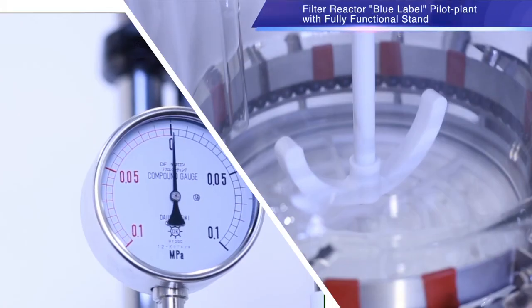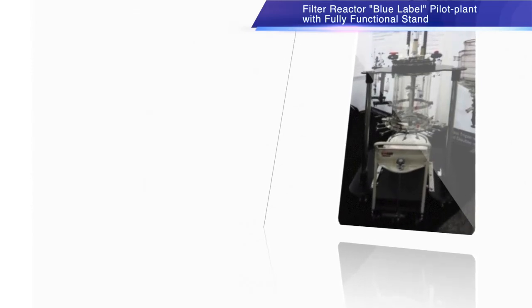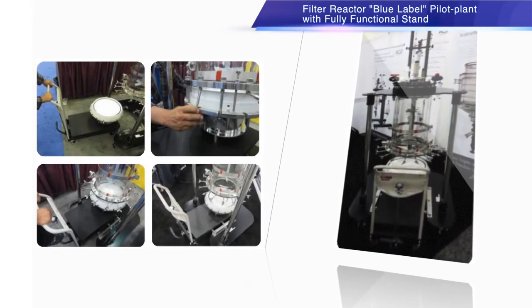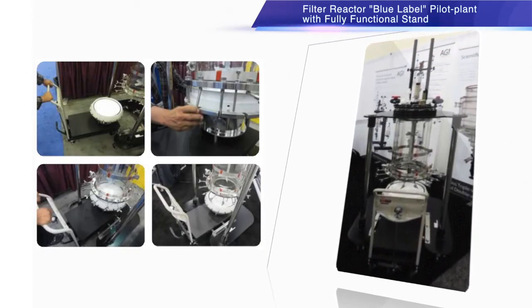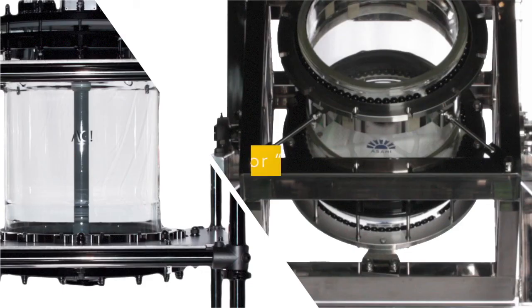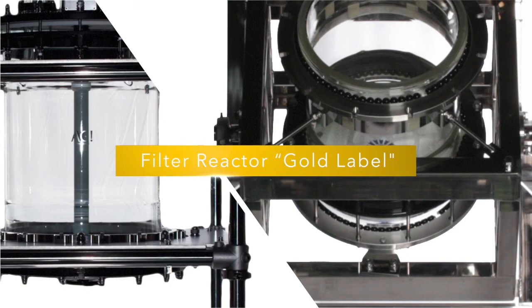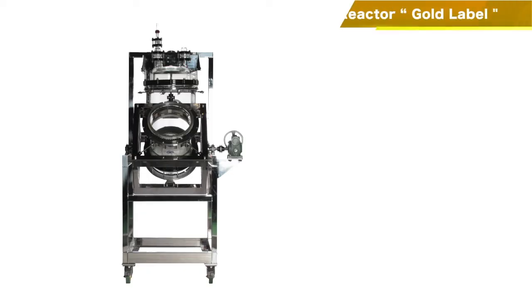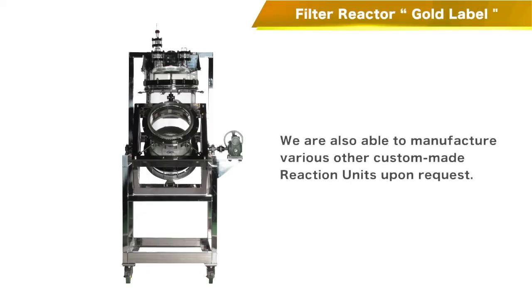Here is the Blue Label Pilot Plant Filter Reactor Unit with stationary stand. Our 50 liter plus capacity units are designed to allow for easy removal of large quantities of powder slurry by using the cart beneath.